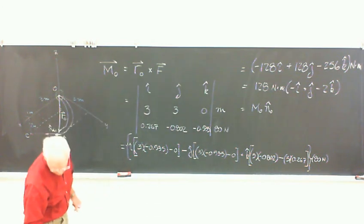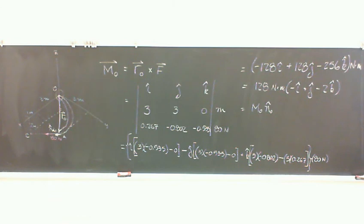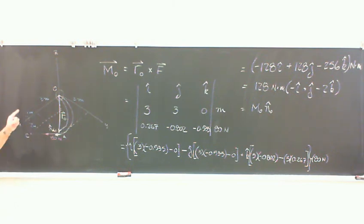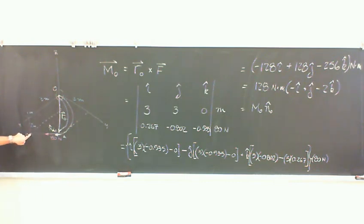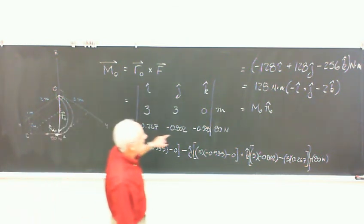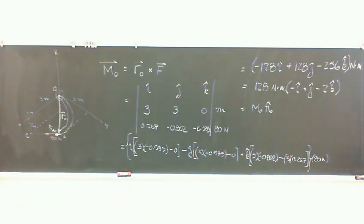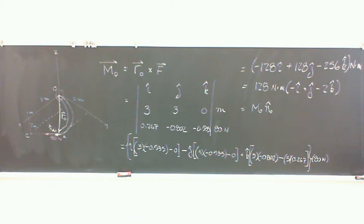Take a couple minutes outside of class and do this using R from O down to point C instead of point A. If you get something different than this, something went wrong — this one's right because we've had lots of people checking. Do it and show yourself that you just need to hit the line of action of the force somewhere — it doesn't matter where. You'll get a different R-O, but that gives a different cross product too, such that you'll come up with the very same answer.